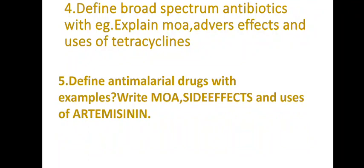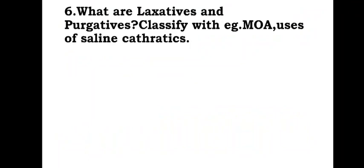For antimalarial drug classification, remember two to three main important classifications — like artemisinin or artemether. You have to remember examples from two to three important classifications, because that pharmacology is what they will ask in the examination. Next: What are laxatives and purgatives? Classify them and write the mechanism of action and uses of saline cathartics.